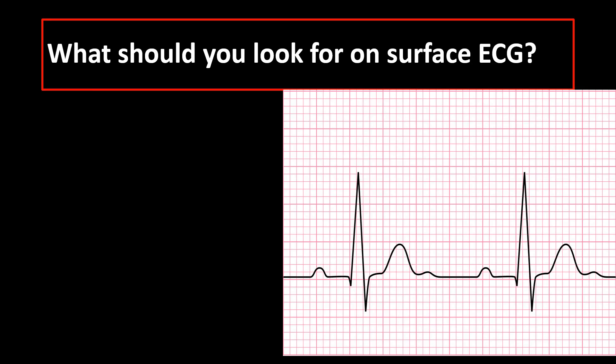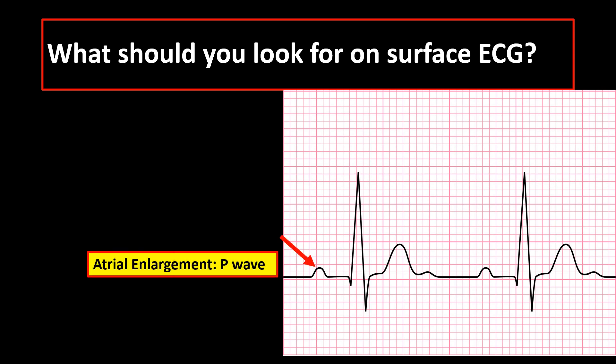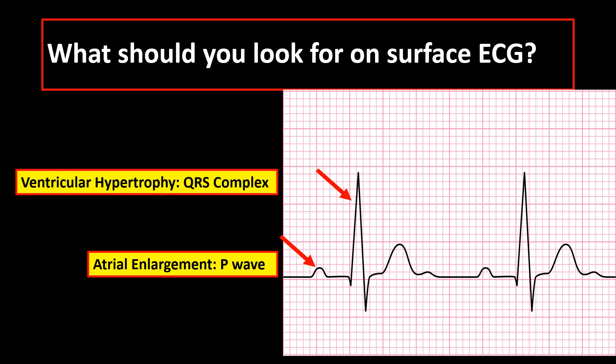What are the indications of possible chamber enlargement or hypertrophy on surface ECG? If you investigate for atrial enlargement, you look at the P waves, since P waves represent atrial depolarization. On the other hand, ventricular depolarization is reflected as QRS complex on surface ECG. So if there is ventricular hypertrophy, you scrutinize the QRS complex. The question is: what P wave changes suggest right or left atrial enlargement, and what QRS complex changes suggest right or left ventricular hypertrophy?